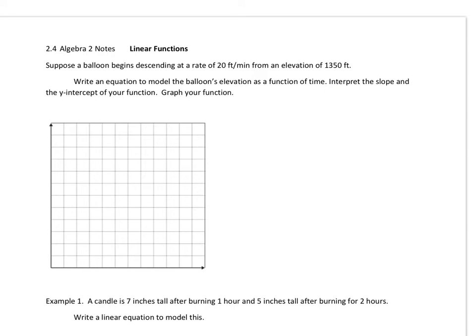This sentence is telling us what our variables are going to be. The balloon's elevation, E, is a function of time, T. Interpret the slope and y-intercept of your function — meaning what does the slope and y-intercept mean in terms of elevation and time. Then graph your function.